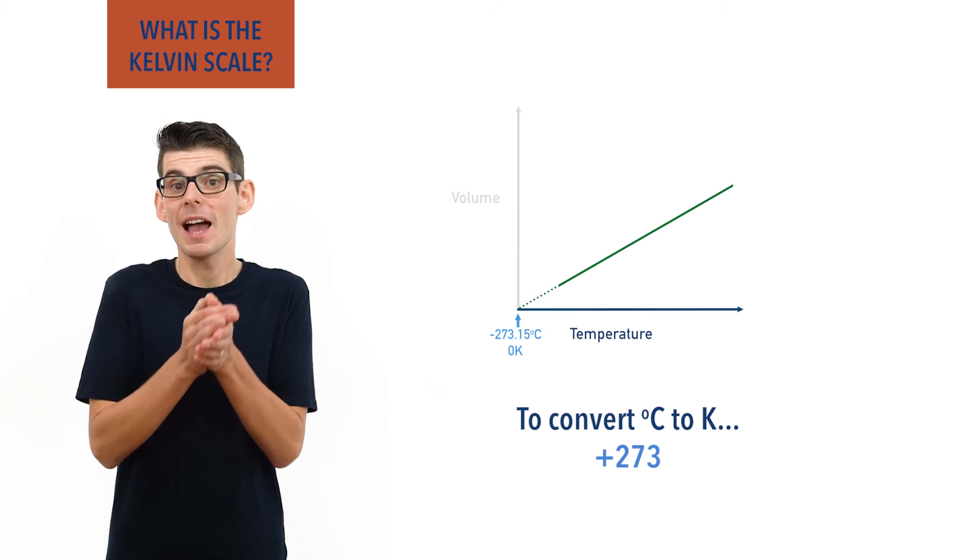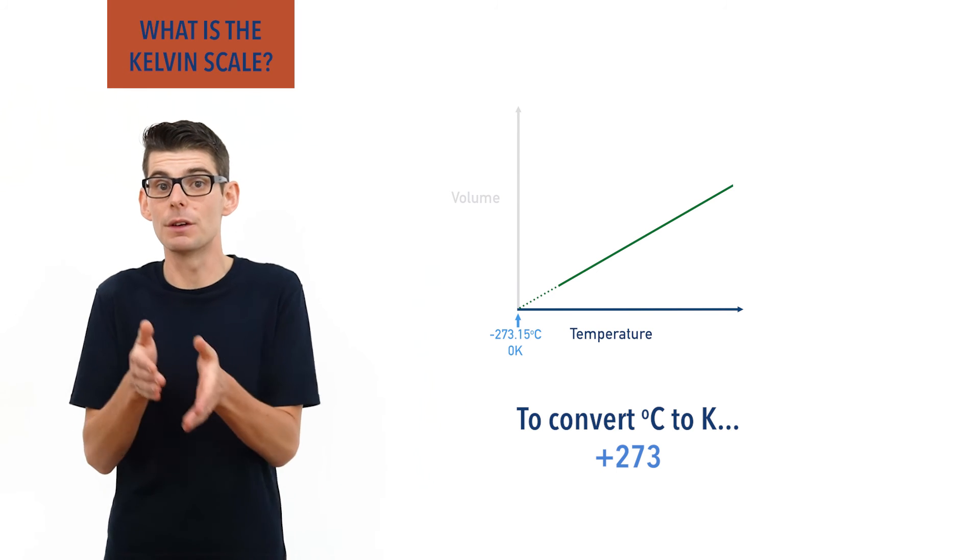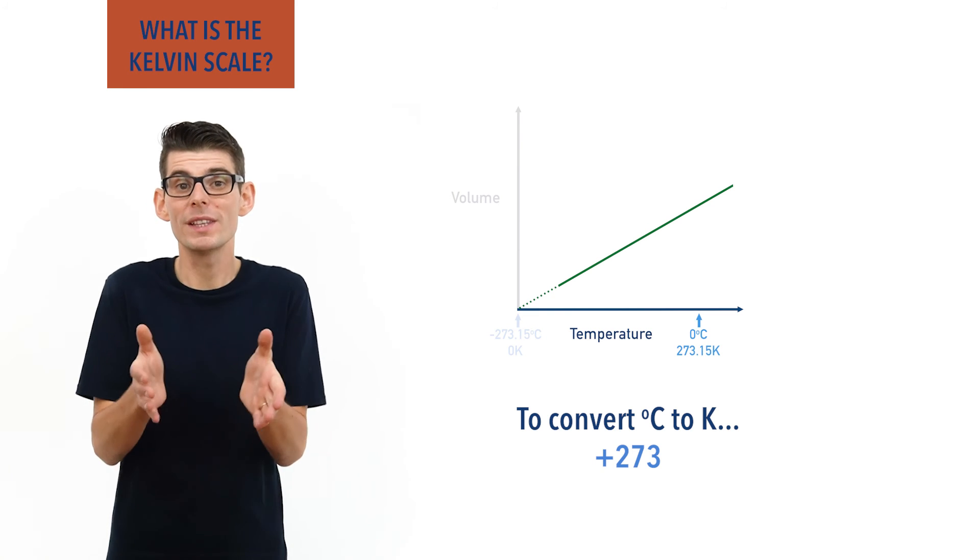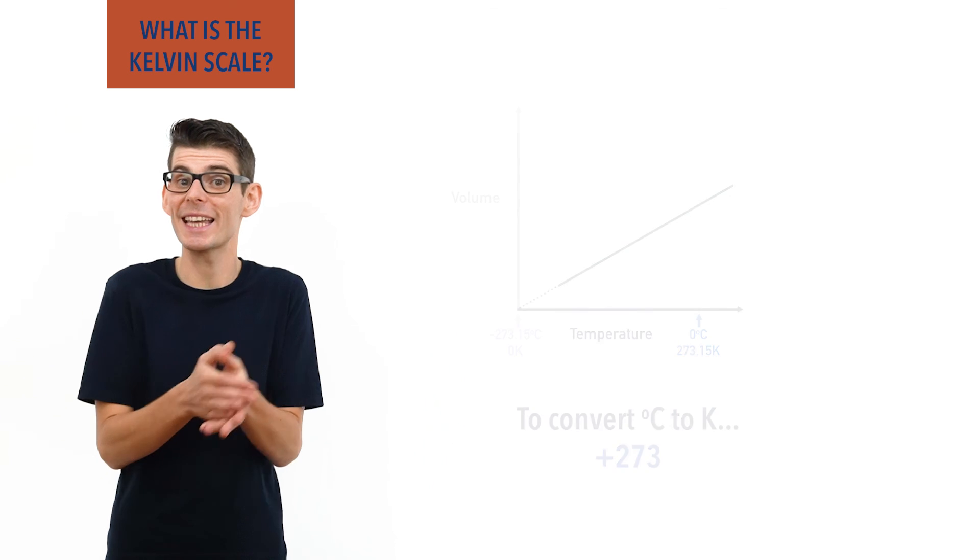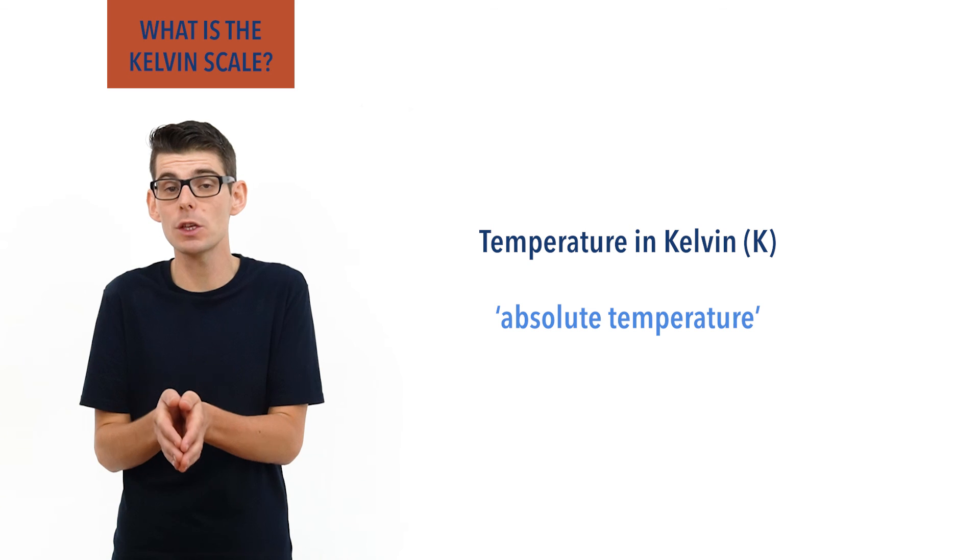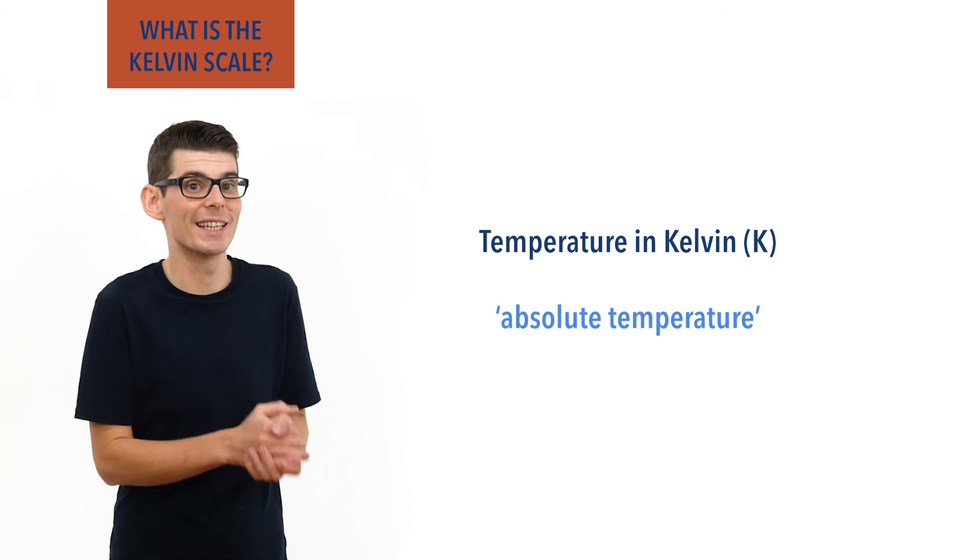Zero Kelvin is the same as minus 273 degrees Celsius, and zero degrees Celsius is the same as 273 Kelvin. When something's temperature is measured in Kelvin, we describe its temperature as absolute as the temperature value is going to be directly linked to the amount of thermal energy it has.